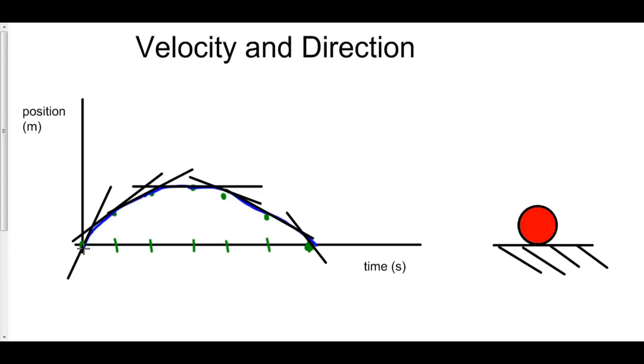So our velocity goes from positive to zero to negative. Not only does velocity tell us what direction the ball is going, you can see the velocity is positive in the beginning, so the ball is going up, and the velocity is negative towards the end, so the ball is going down. Not only does it tell us that, but it also tells us where the ball reached its maximum height.